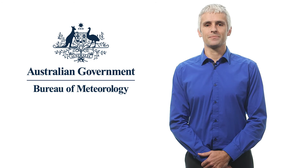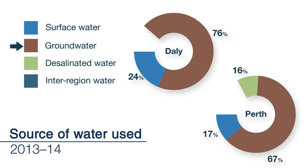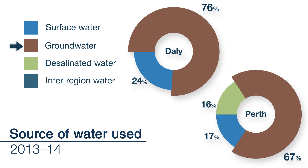While surface water remained the largest source of water used across Australia, groundwater was also a big part of the picture. Surface water accounted for 84% of all water used, while groundwater accounted for almost 15%. In the Daly and Perth regions, groundwater accounts for more than two-thirds of total water supply, as surface water is less reliable.